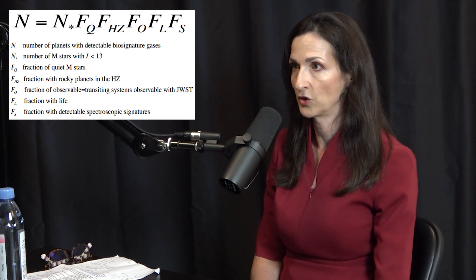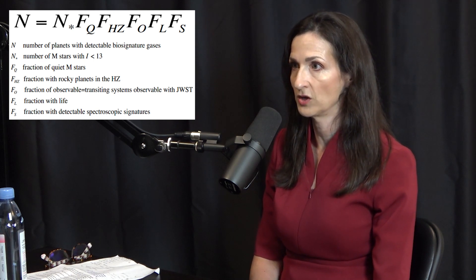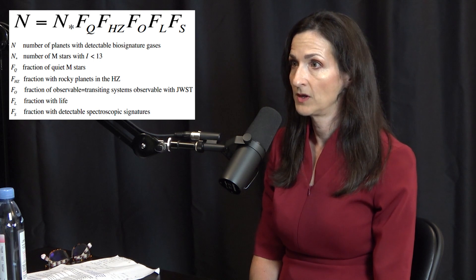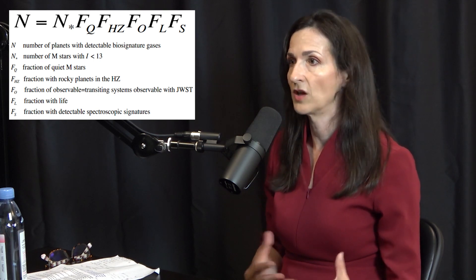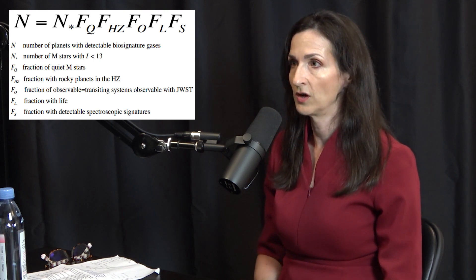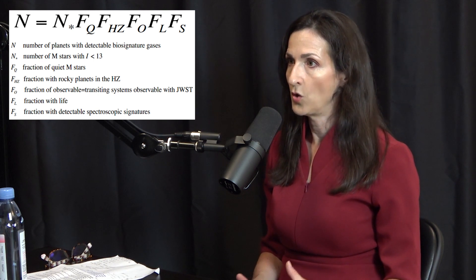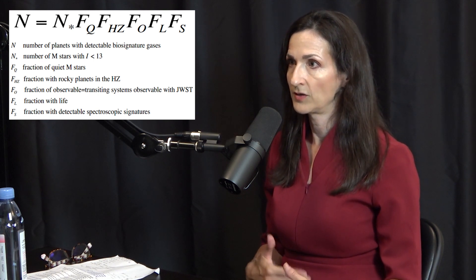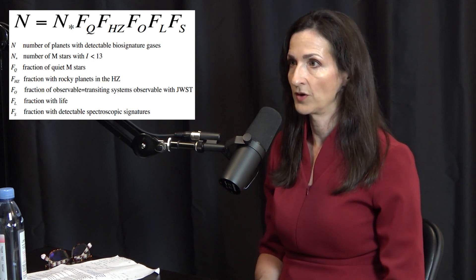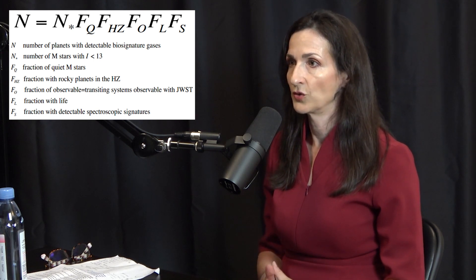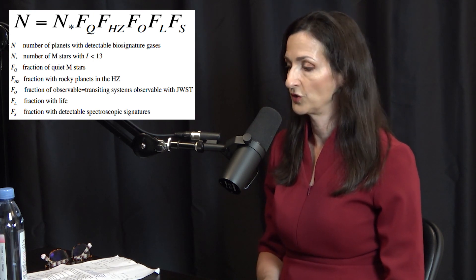So all of these factors so far — number of stars accessible to whatever telescope, fraction of stars that are quiet, fraction that are geometrically observable — are all things we can measure. And there's one more term in the Seager equation we can measure: I call it the fraction of planets in the habitable zone. Believe it or not, we have a handle on that for a certain set of stars. From the Kepler Space Telescope, we have estimates for how many planets are in the so-called habitable zone of the host star.